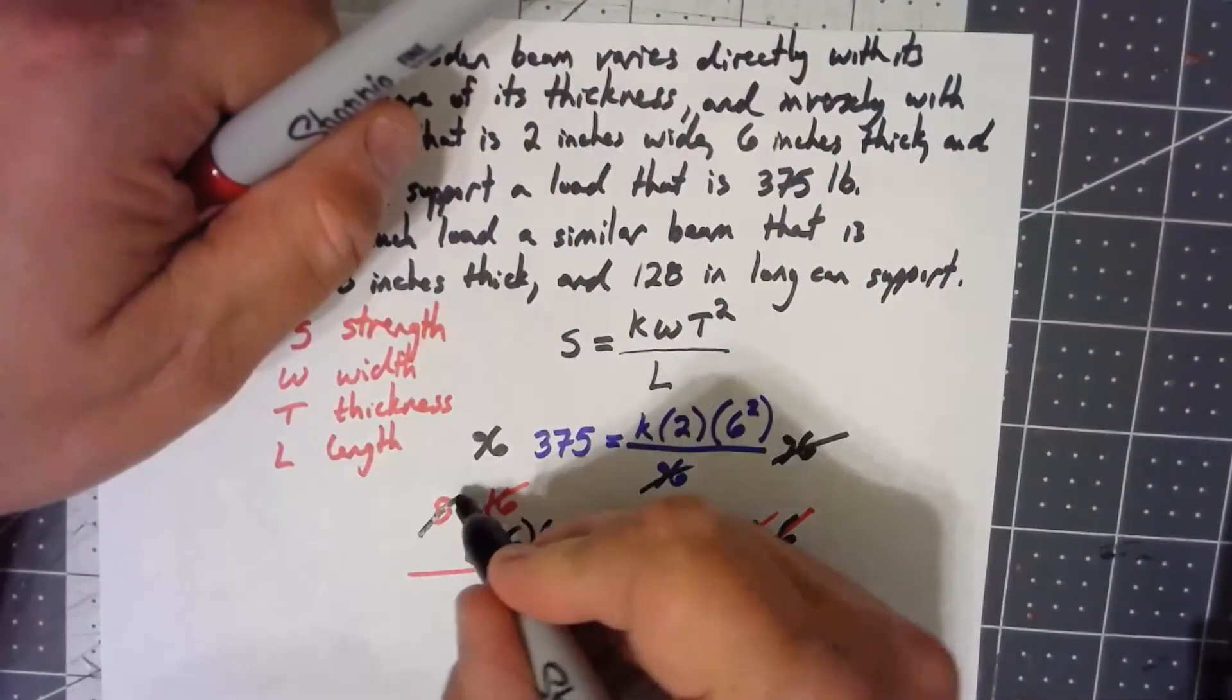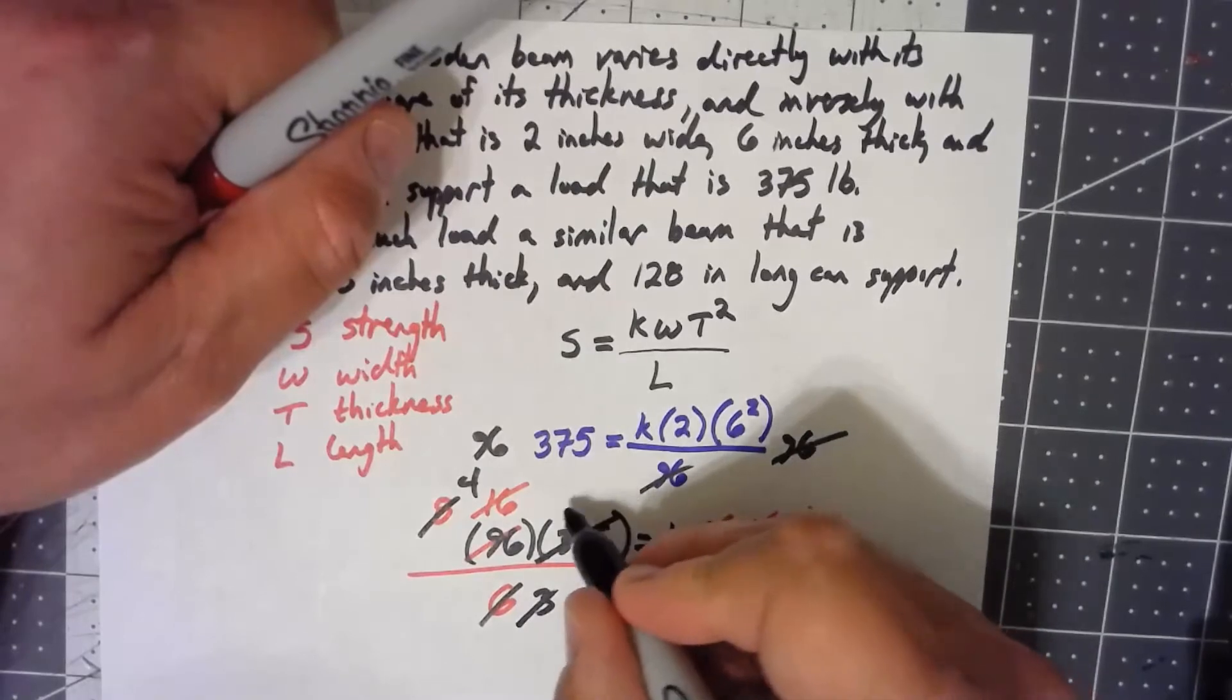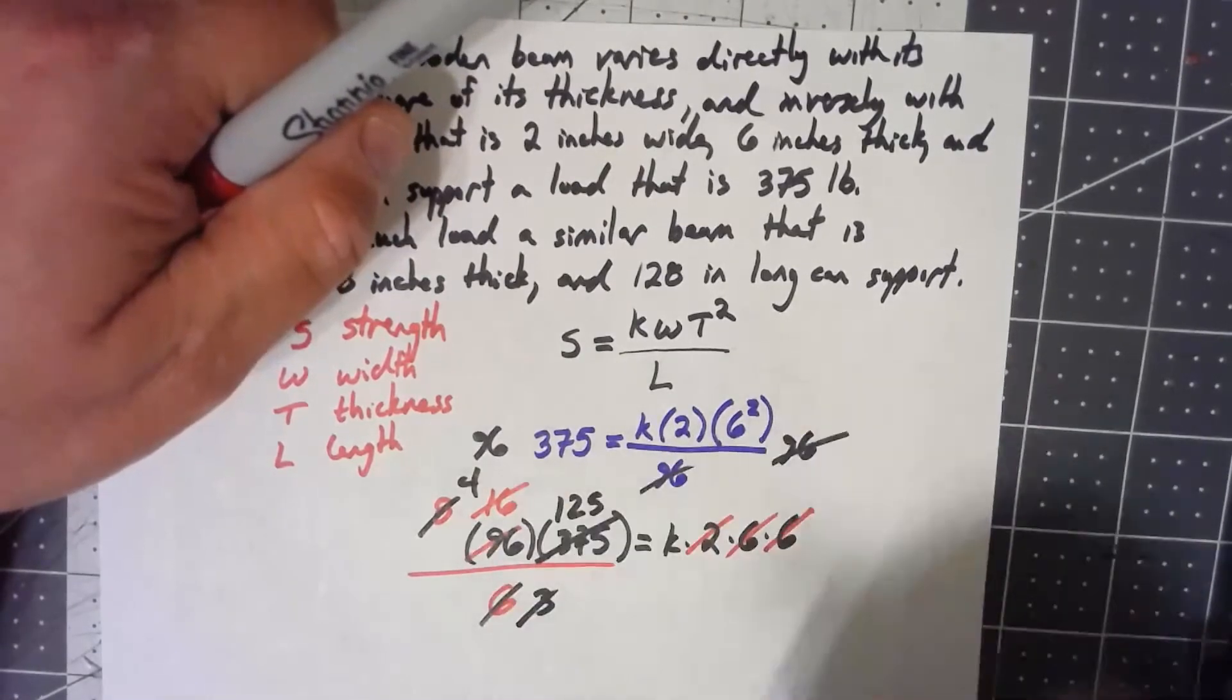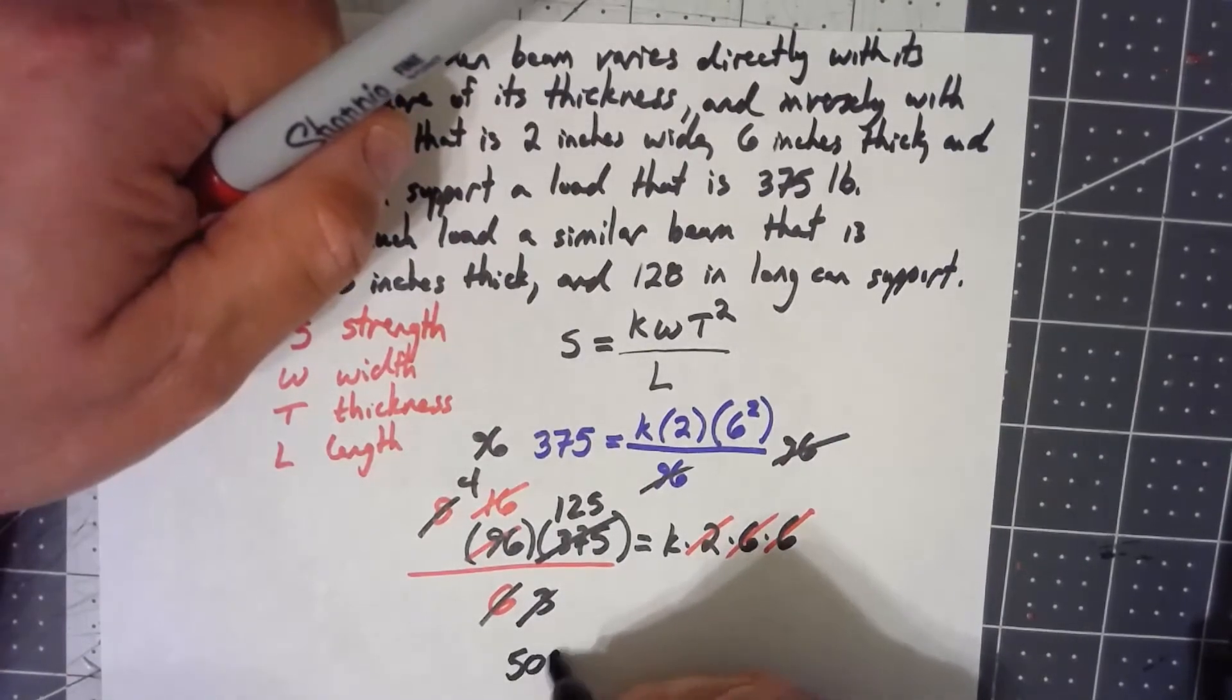Six goes in, let's see, I can cancel a 2 out of there, leaving with a 4 and a 3, and a 3 out of there, leaving 125. So 125 times 4 left is 500 is K.